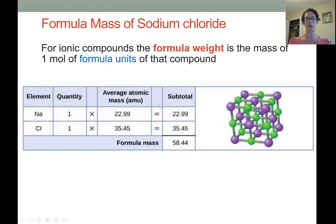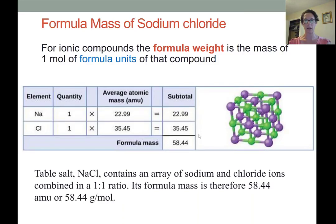To determine the molar mass of an ionic compound, we simply look at this lowest common ratio of one to one and we call that the formula weight. So we're going to add up the mass of one sodium ion and one chloride ion. We find that altogether the formula mass or the formula weight of this ionic compound is 58.44. So table salt has an array of sodium and chloride ions combined in a one-to-one ratio, so its formula mass comes to the addition of the mass of a sodium ion and the mass of a chloride ion, or 58.44 grams per mole.